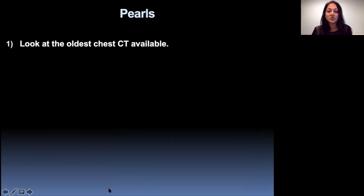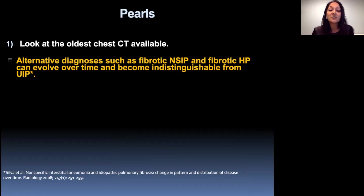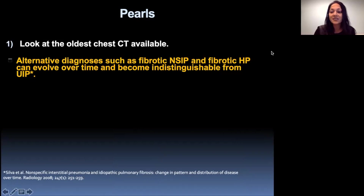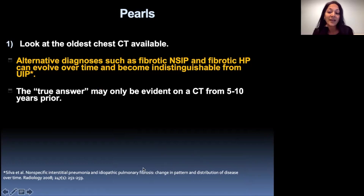Let me review a few pearls. The first pearl is to look at the oldest chest CT available. Based on a paper from Silva et al. from 2008, which looked at patients with fibrotic NSIP and fibrotic HP, in 28% of these patients the findings evolved over time and became indistinguishable from UIP — they went from CT patterns showing NSIP and HP to meeting the criteria for typical UIP over time, even though they had biopsy-proven alternative diagnoses. The true answer may only be evident on a CT from five to ten years prior, so always look at the oldest CT.